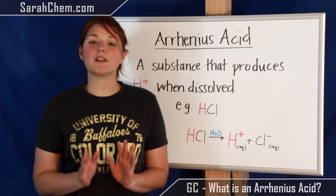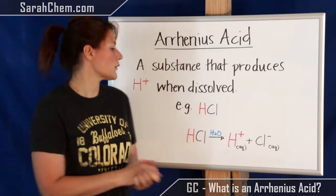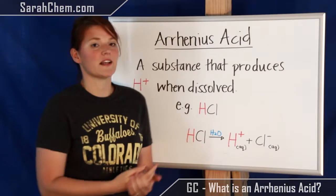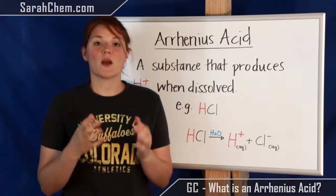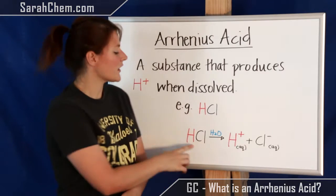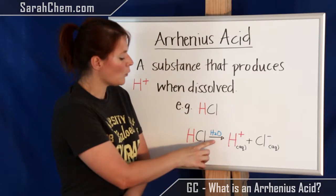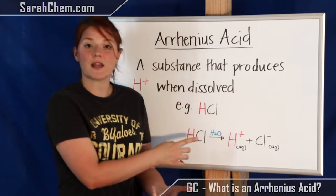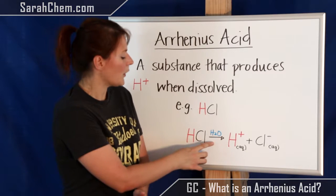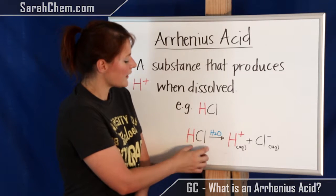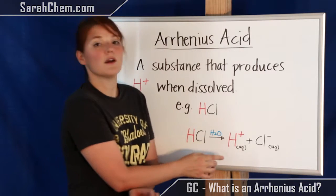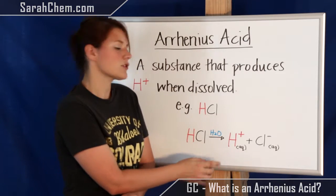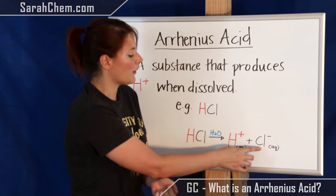An example of an Arrhenius acid would be HCl, or hydrochloric acid. When we take HCl and dissolve it in water, put it into an aqueous solution, what we'll see is that it breaks apart into H+, also called a proton, and chloride.